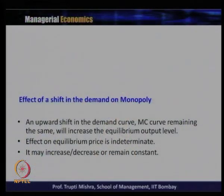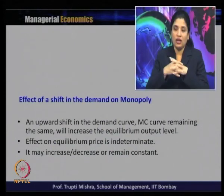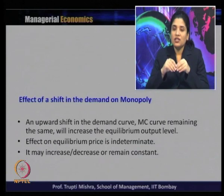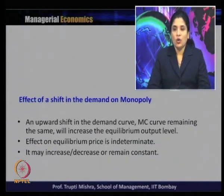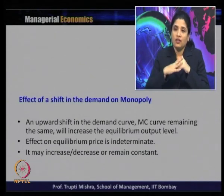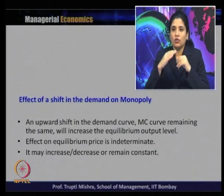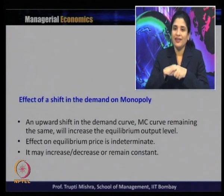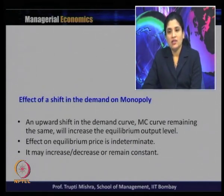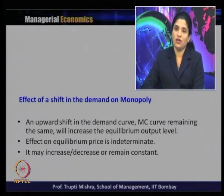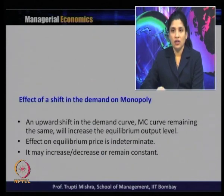Next, we examine the effect of a shift in demand on monopoly equilibrium. When demand increases — an upward shift in the demand curve — with the marginal cost curve remaining the same, the equilibrium output level will increase. However, the effect on equilibrium price is indeterminate: it may increase, decrease, or remain constant depending on the shape of the marginal cost curve.